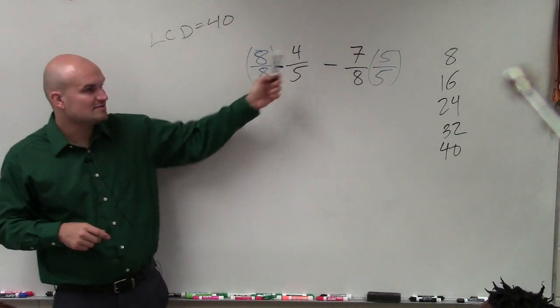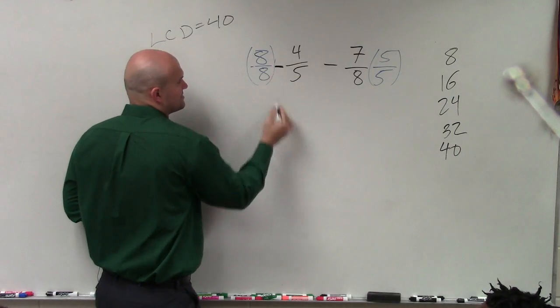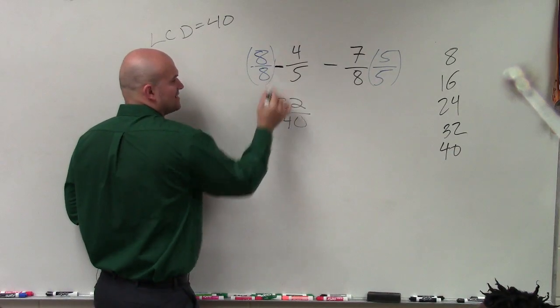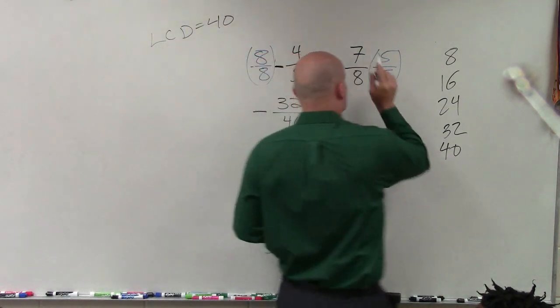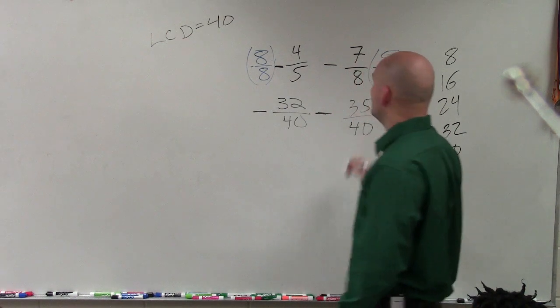So 8 times 4 is going to be 32. So 8 times 4 is 32. 8 times 5 is 40. And obviously, that's a positive times a negative, so that's a negative. And then I have minus 7 times 5, which is 35, over 40.